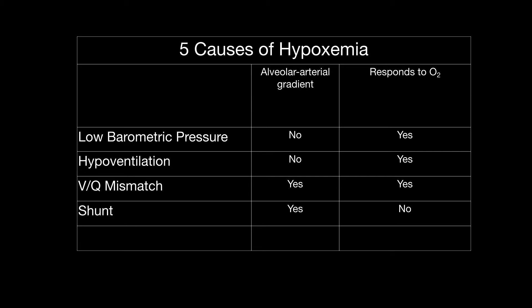The fourth cause is shunt, which is an extreme version of VQ mismatch. Here you have blood flow but no ventilation at all. The classic form of shunt in pediatrics is congenital heart disease — a hole in the heart where blood enters the right side, crosses the septum into the left side, and completely bypasses the lung. No matter how much oxygen you place in those lungs, the blood will never see it. That's why there's a huge AA gradient and why it doesn't respond to oxygen. In respiratory disease, if you're giving a patient a ton of oxygen and they just don't seem to be getting better, that's shunt.